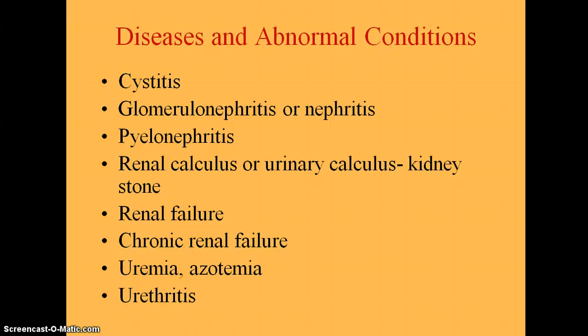Pyelonephritis is an inflammation of the kidney tissue and the renal pelvis — the upper end of the ureter. It's usually caused by pyogenic bacteria, which are pus-forming bacteria. Symptoms include chills, fever, back pain, painful urination, hematuria which is blood in the urine, dysuria, and pyuria which is pus in the urine. Treatments are antibiotics and increased fluids, just like with cystitis.